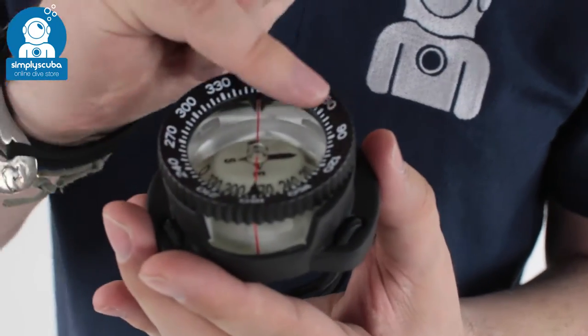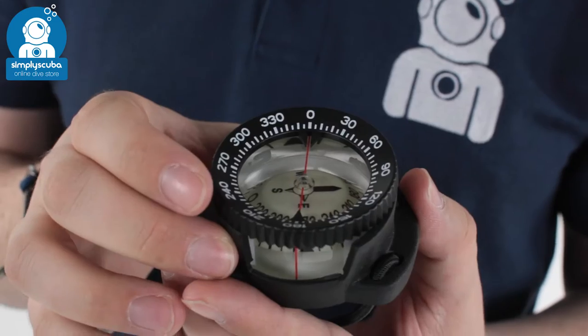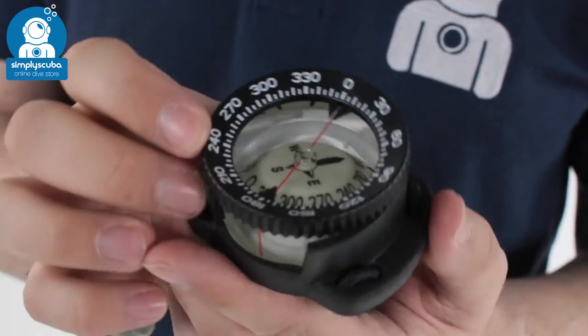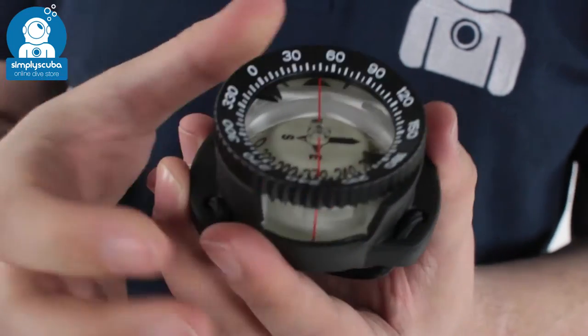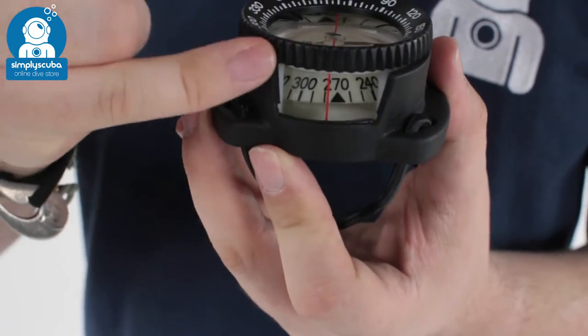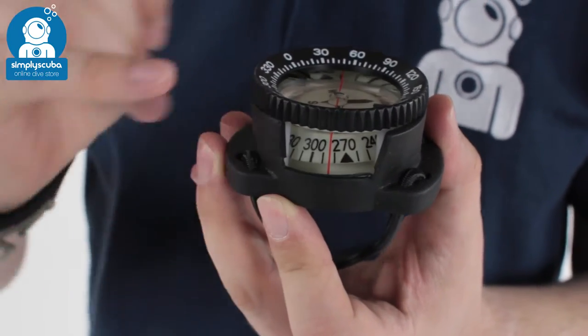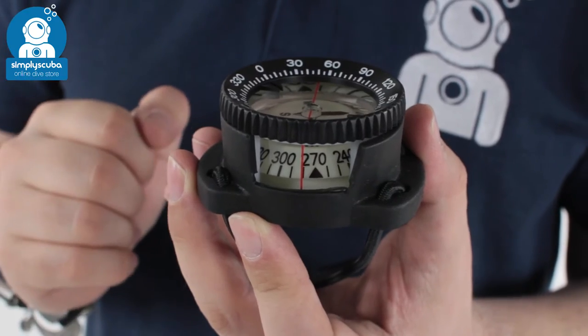So the compass itself has got a decent amount of tilt function to it, so you can tilt the compass and it will still turn. You have a rotating bezel, you have a nice obvious lubber line, and you've got a side window as well for level navigation.